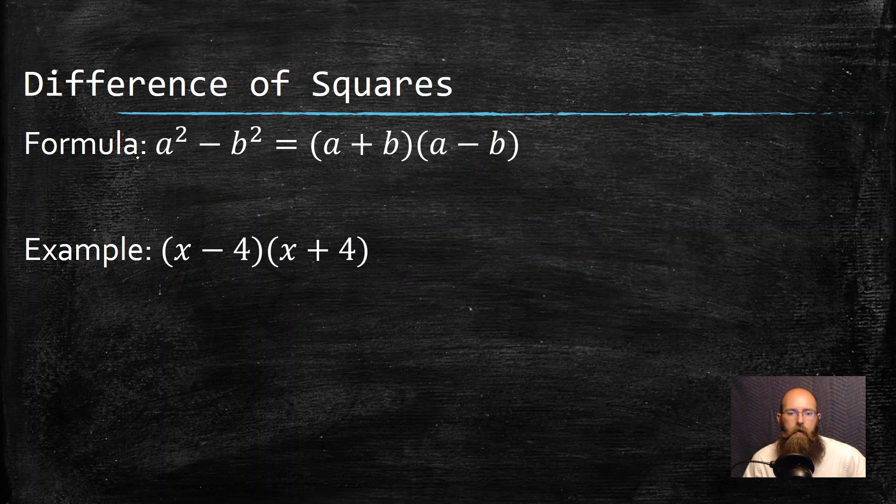Then we have difference of squares. So if I have two things that are both squared, they're being subtracted, they can break up like this, or if they're broken up, I can simplify them like that, which means I just square the thing in front minus squaring the thing in back.